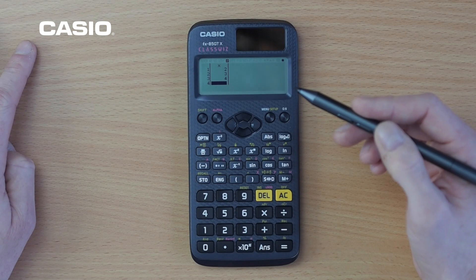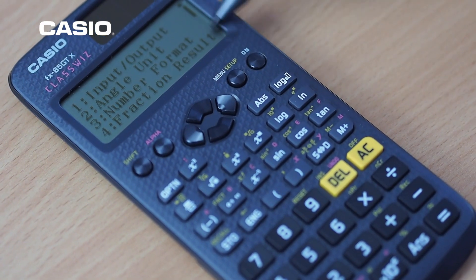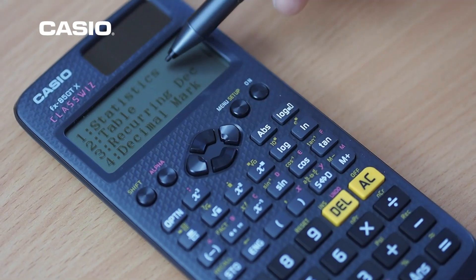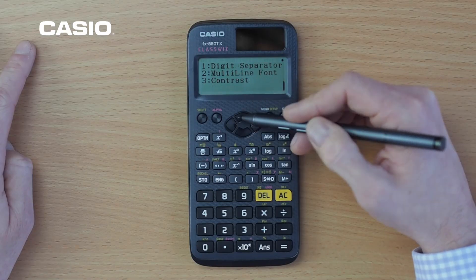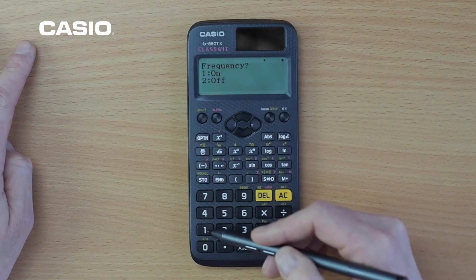Now there is another way we can display the data which is with a frequency. So if we go into the setup with the scroll bar down the side here and we go into the statistics section here and we can turn the frequency on.